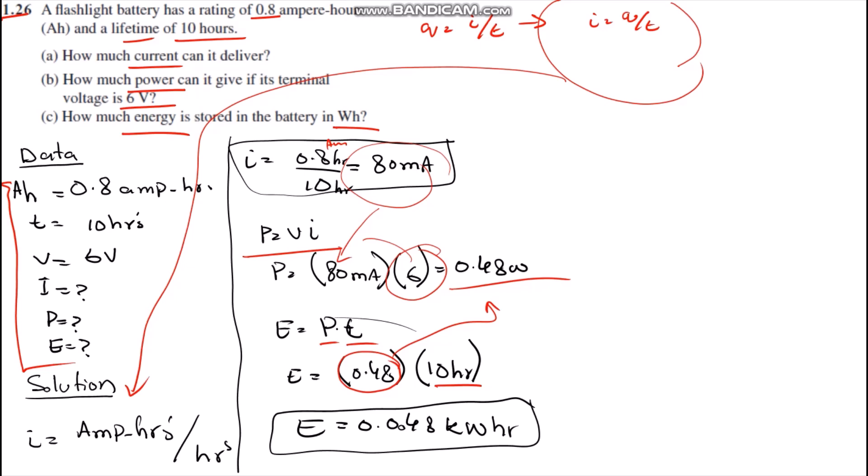If we want to convert it into watt-hours, we simply calculate: equals 0.048 multiplied by 1000 in order to get the value in watt-hours.